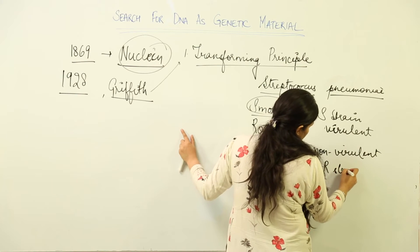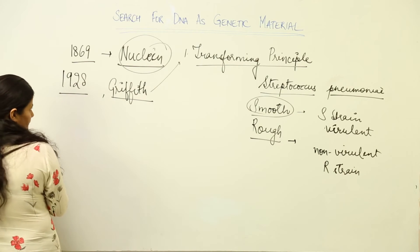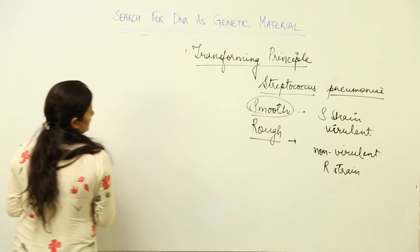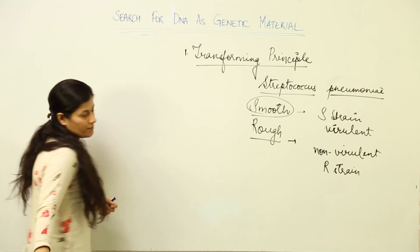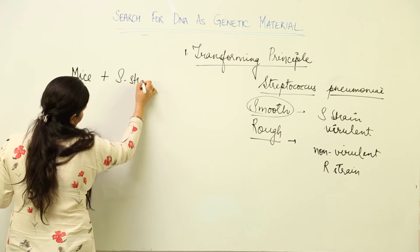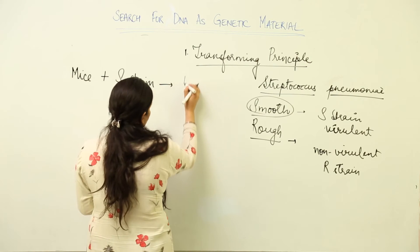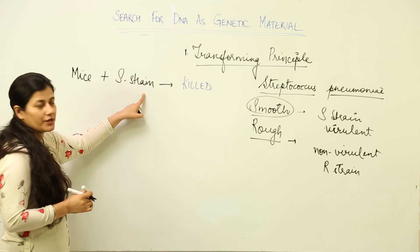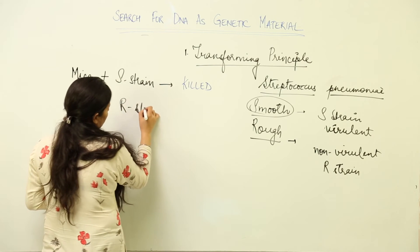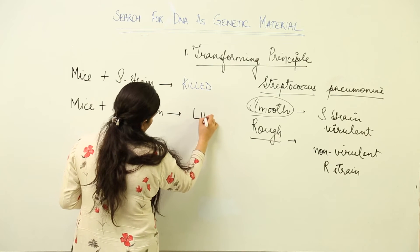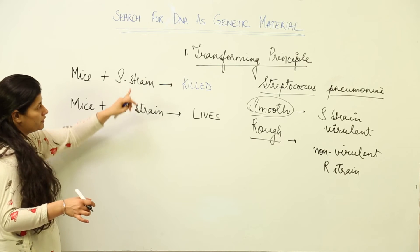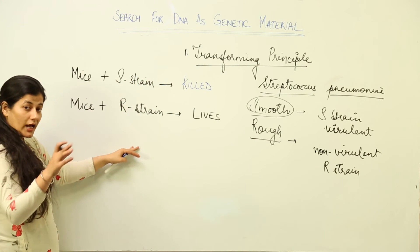Using these two colonies, Griffith conducted an experiment with mice. He took a mouse and infected it with S strain — the mouse was killed, confirming S strain is virulent. Then he infected a mouse with R strain — the mouse lived and did not die, confirming R strain is non-virulent. This established that S strain is virulent and R strain is not.